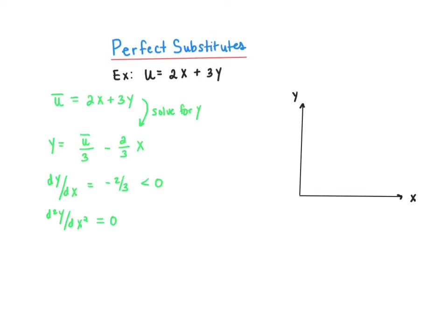Here, when I do that, dy/dx is minus 2/3, which is less than 0, and d²y/dx² is 0. This tells me that the indifference curve slopes down, and this tells me it slopes down at a constant rate. Each indifference curve is therefore downward sloping and linear.